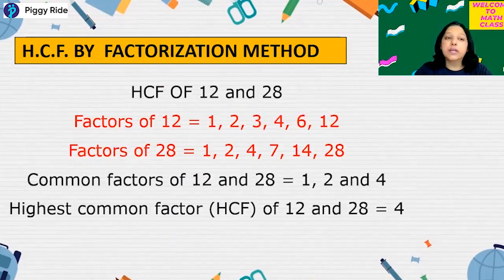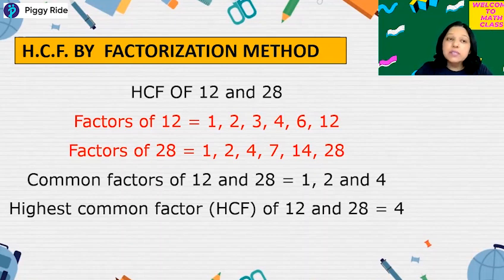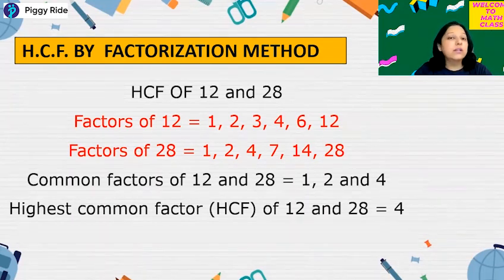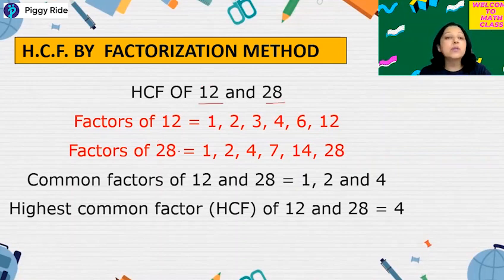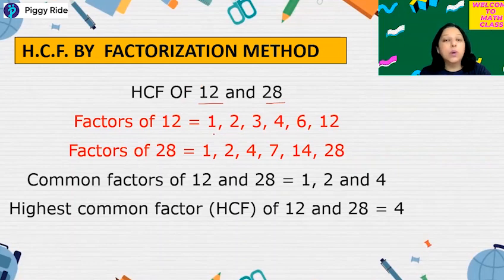Whenever you have to find an HCF by factorization method, we have to find the factors, and as the name suggests, highest common factor — so out of the factors, whatever will be the highest common factor, that answer will be the HCF. Now you can see in this example of HCF of 12 and 28. First step, you write all the factors of 12: 1, 2, 3, 4,